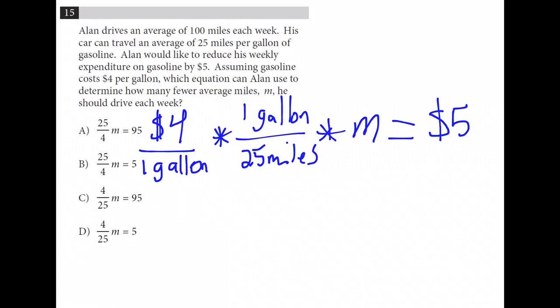So let's break down how we created this equation. It tells us in the problem that it costs $4 per 1 gallon. And that from 1 gallon, we average 25 miles. So, to figure out how many fewer average miles, m, that will reduce our cost by $5, we want to know how many miles do we have to drive for it to cost $5. And then this is what we would subtract from 100, this value of m. But we don't have to solve the entire problem, we just have to set up the equation. And the one thing to notice here is that 1 gallon and 1 gallon cross out. So we're left with 4 over 25 m is equal to 5.